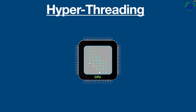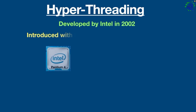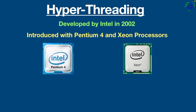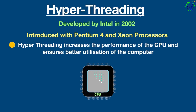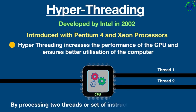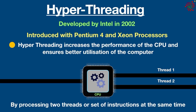Hello everyone. What is hyper-threading? This is what we are going to talk about in this video. Hyper-threading is a technology developed by Intel in 2002, introduced with Pentium 4 and Xeon processors. What it does is increase the performance of the CPU and ensure better utilization of the computer. Technically speaking, hyper-threading allows the processor to work more efficiently by processing two threads or sets of instructions at the same time, so the CPU can run faster and perform more tasks in the same amount of time.